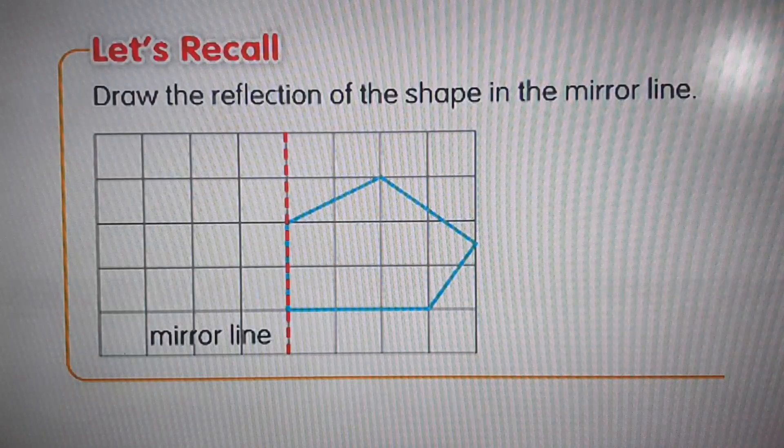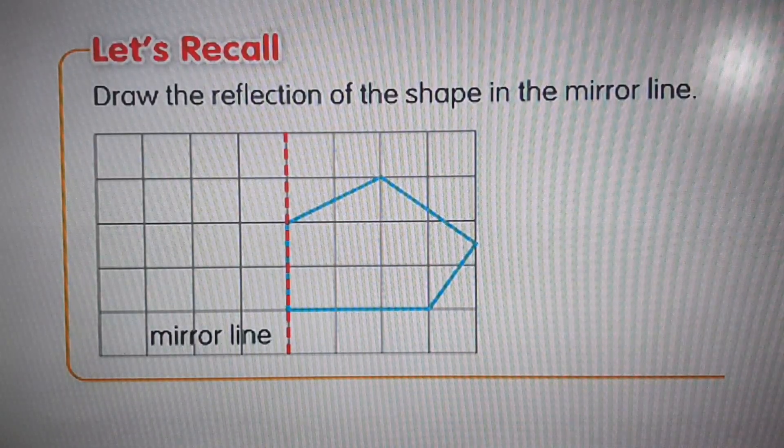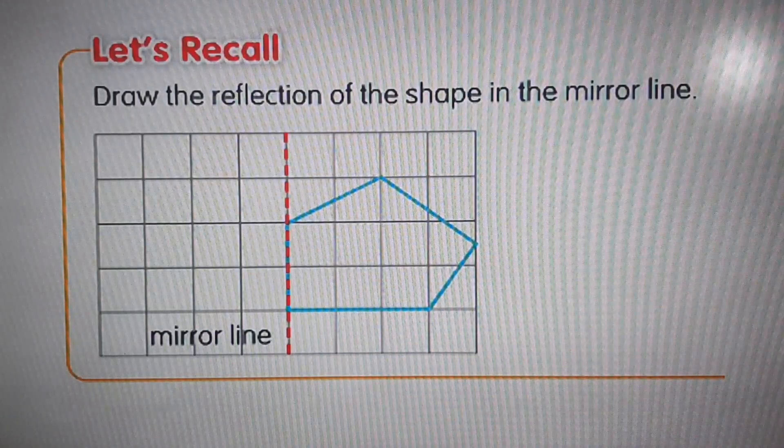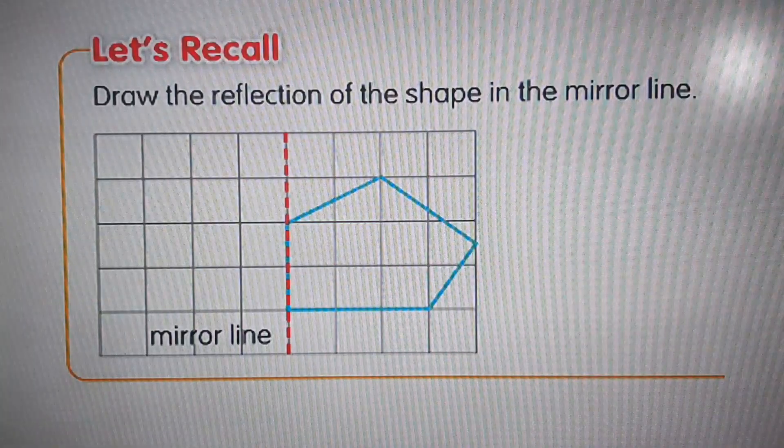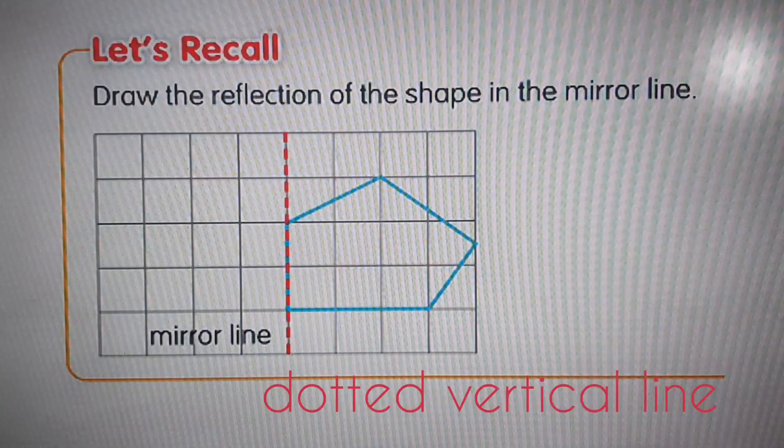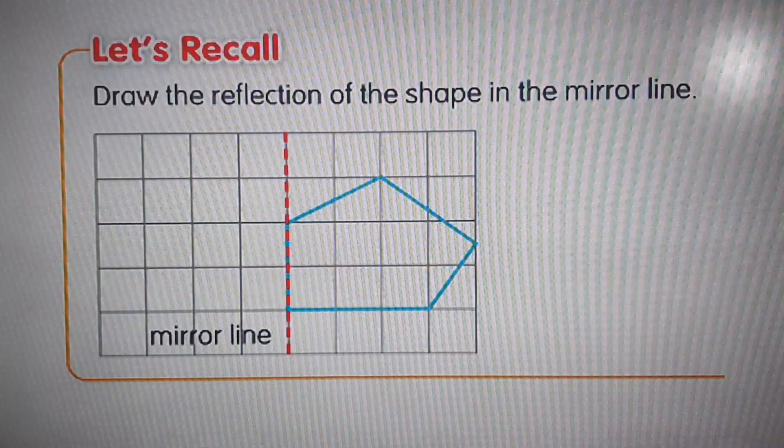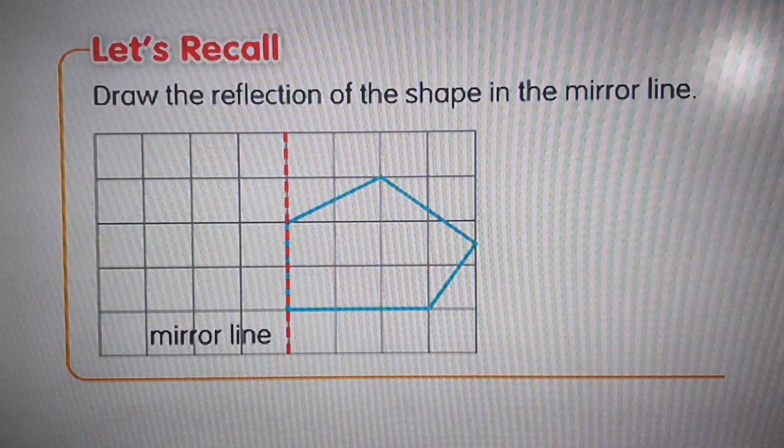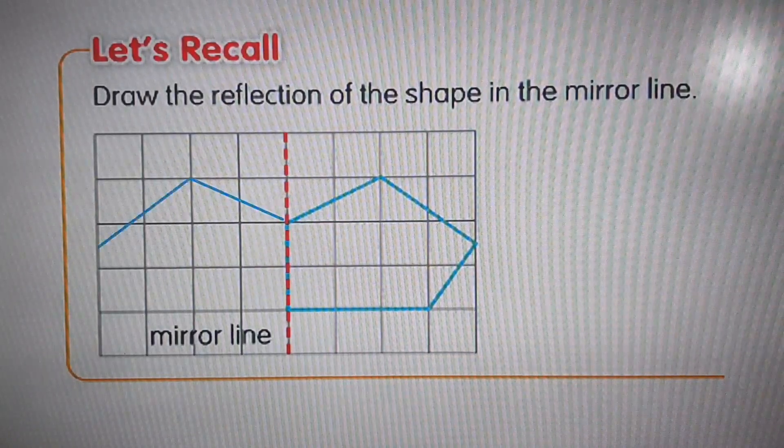Before we start, let me ask you this. Do you know the reflection of this shape in the mirror line? By the way, the dotted vertical line here is known as the mirror line. Do you have the answer in your mind? Let's find out. Exactly. It looks like this.